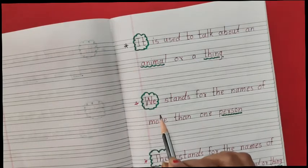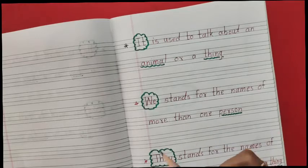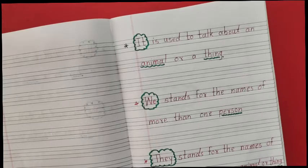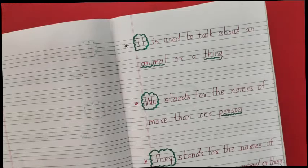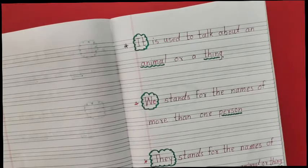Now talking about we. We stands for the names of more than one person. Suppose in a class, all friends are standing together in a group. There are many persons. So you can say we are standing, we want something. We stands for the names of more than one person.